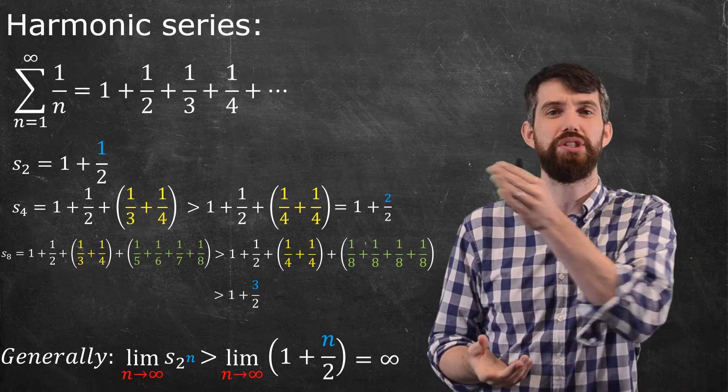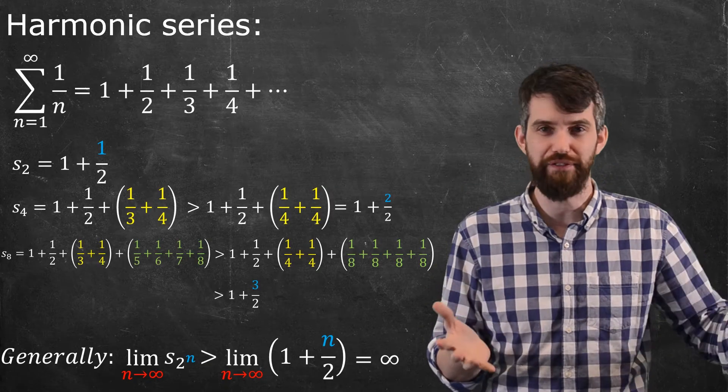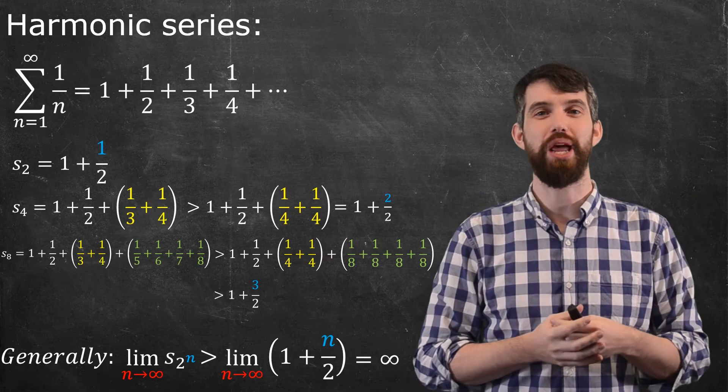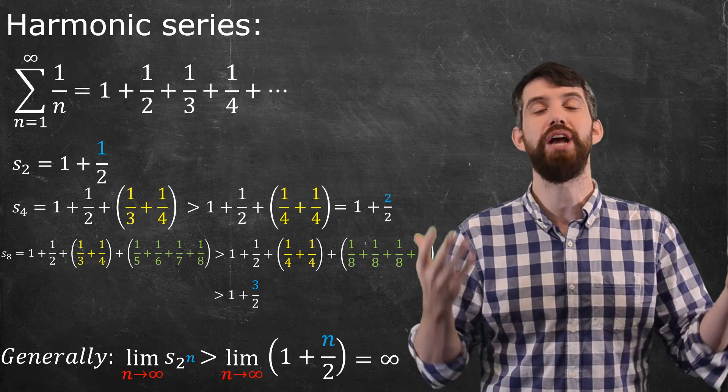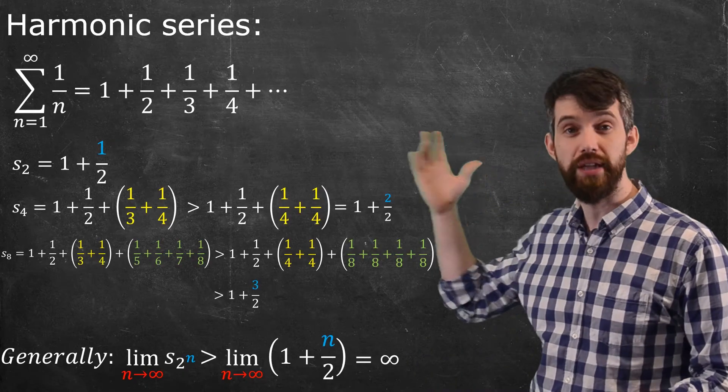But even if just some of the partial sums diverge, as long as it regularly goes off towards infinity, then the whole thing diverges. It can't get close to a finite number every once in a while. It gets as large as you might wish. So we say the harmonic series diverges.